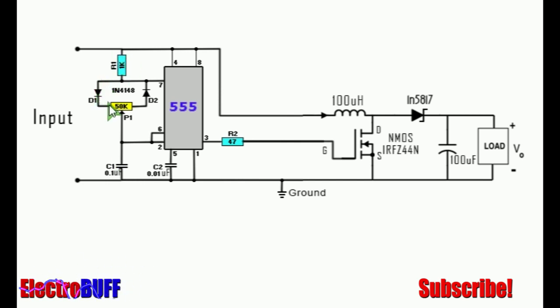C1 will be charging through R1, through D1, and through one side of the potentiometer. It will be discharging through the other side of the potentiometer, through D2, and the collector pin of the discharge transistor at pin 7.